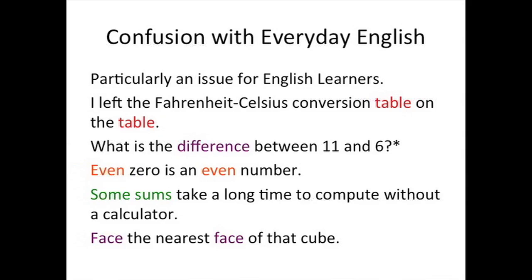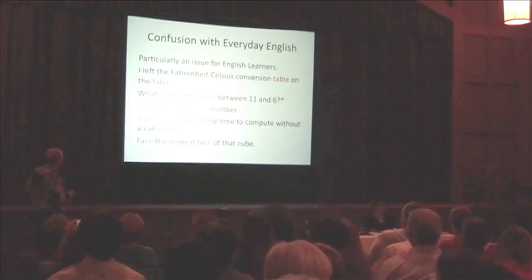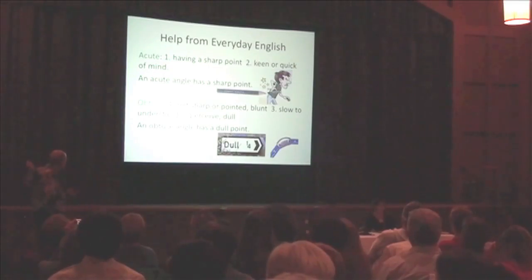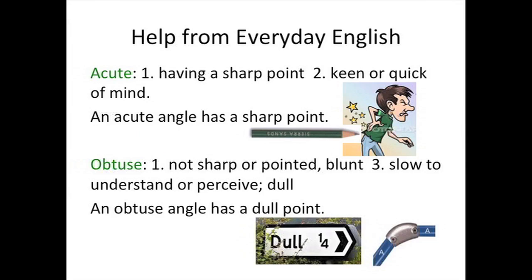There's confusion with everyday language. 'I left the Fahrenheit-Celsius conversion table on the table.' I owe this one to Harold. What's the difference between 11 and 6? One answer is: 6 is curvy and 11 is not. There are a number of others. Acute — but sometimes we get help. Acute means sharp. Ouch.